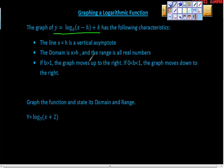The line x equals h is a vertical asymptote. Remember, a vertical asymptote is a vertical line that a function approaches but never gets to, so it could do that in a lot of ways. The domain is x is greater than h, and the range is all real numbers.